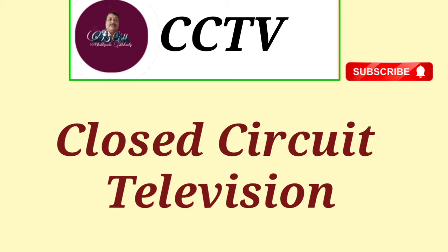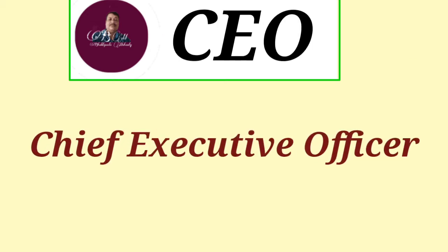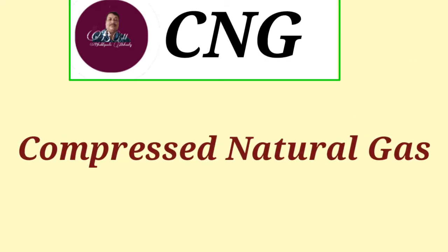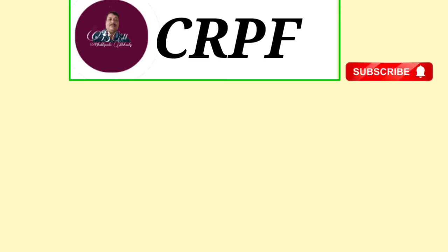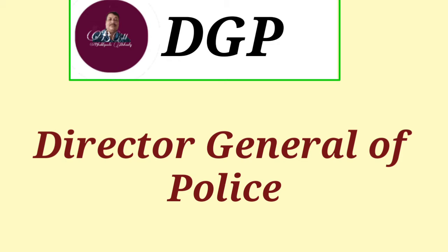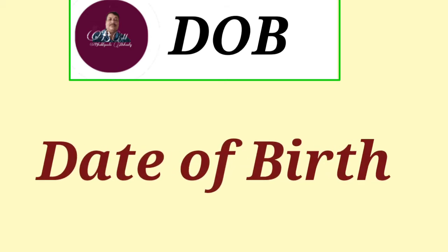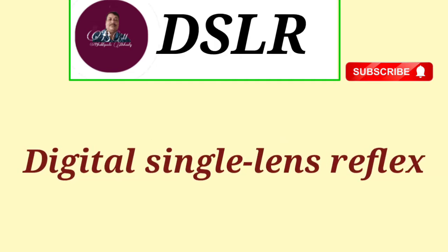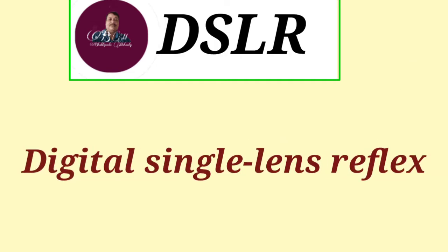CEO: Chief Executive Officer. CID: Criminal Investigation Department. CNG: Compressed Natural Gas. CRPF: Central Reserve Police Force. DGP: Director General of Police. DOB: Date of Birth. DRDO: Defense Research and Development Organization. DSLR: Digital Single Lens Reflex.